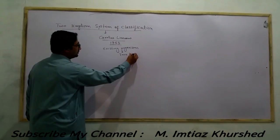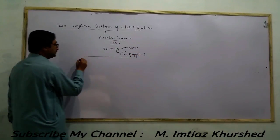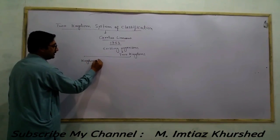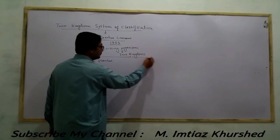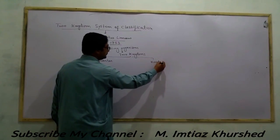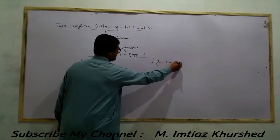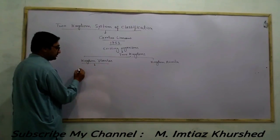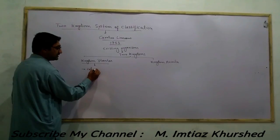The two kingdoms are divided: one kingdom is Kingdom Plantae and the other is Kingdom Animalia. The Kingdom Plantae has certain characteristics by which the two groups of organisms are divided.